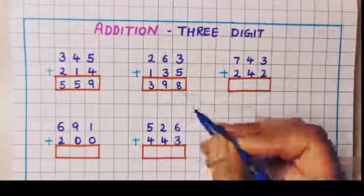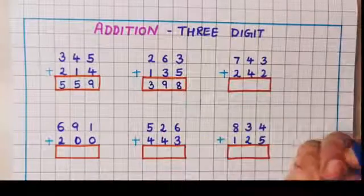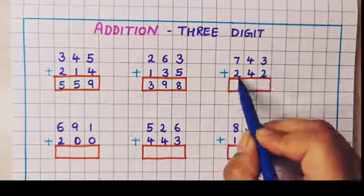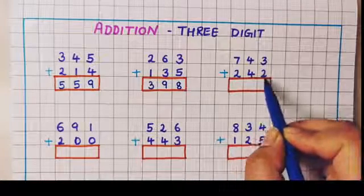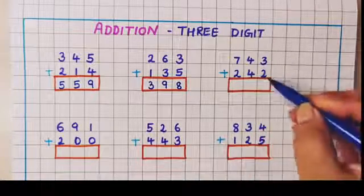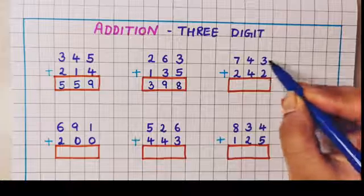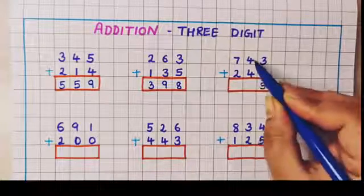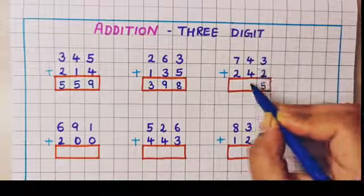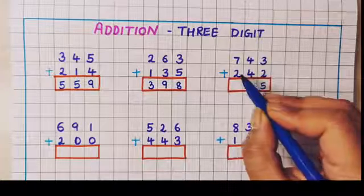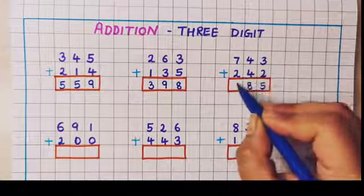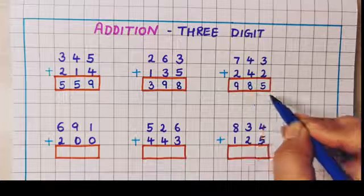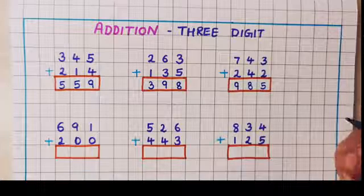Now the next problem is 743 plus 242. We will start with the ones place addition: 3 plus 2 is 5, 4 plus 4 is 8, and 7 plus 2 is 9. So the answer is 985.